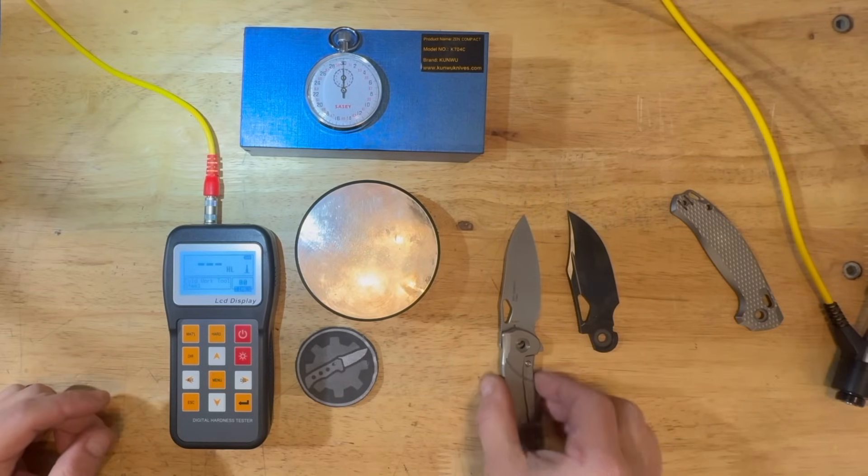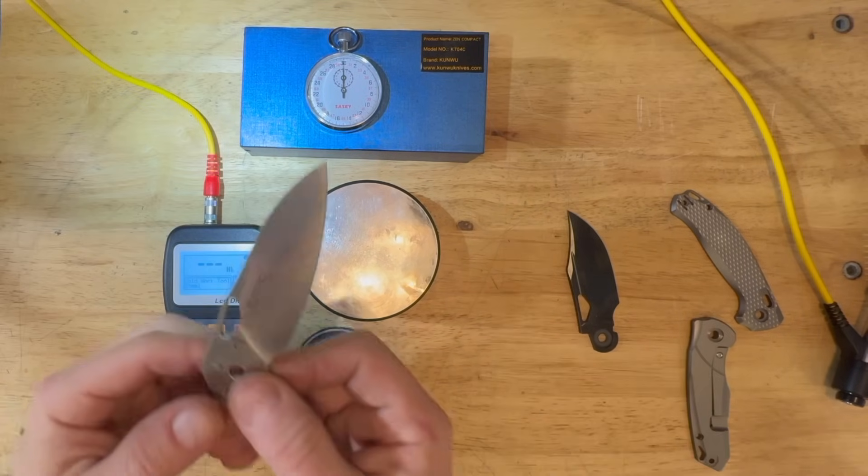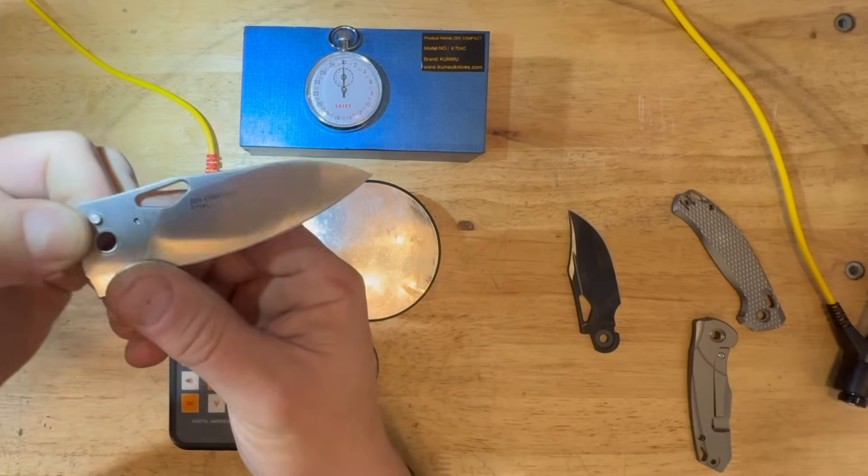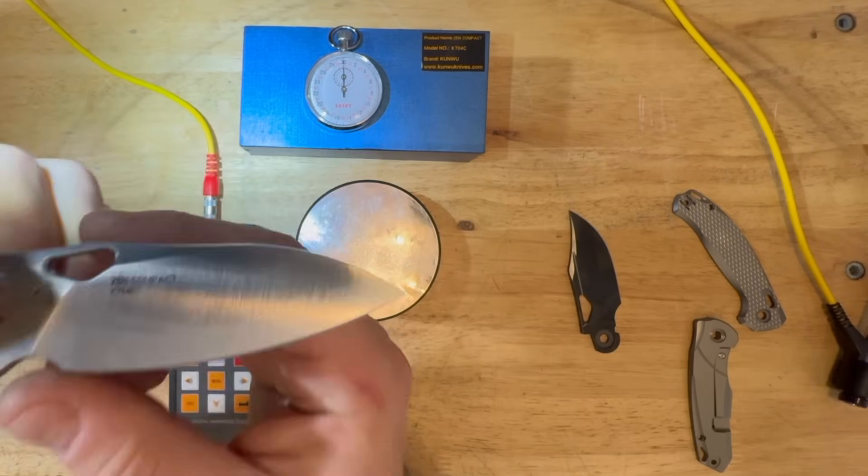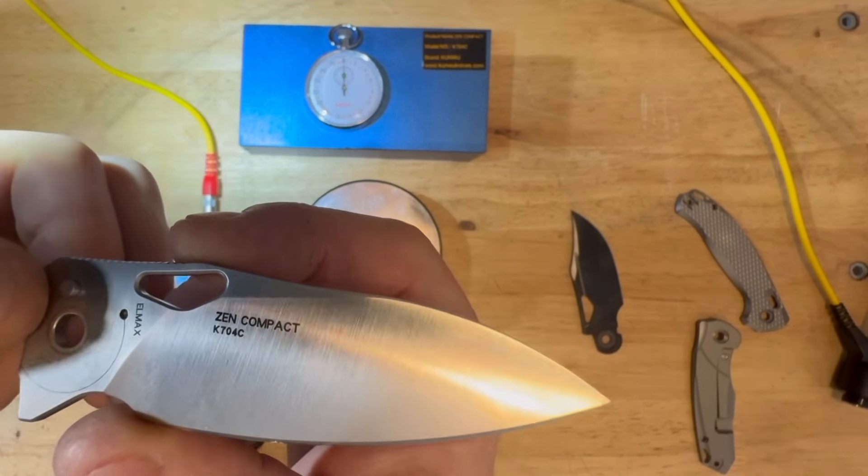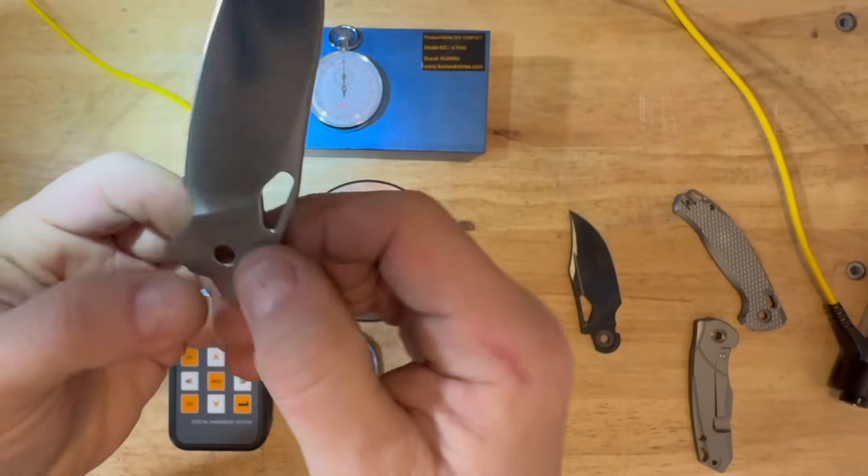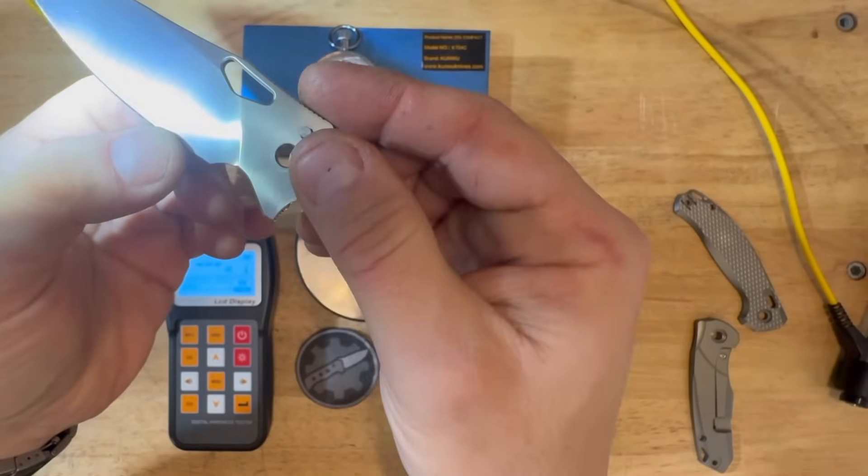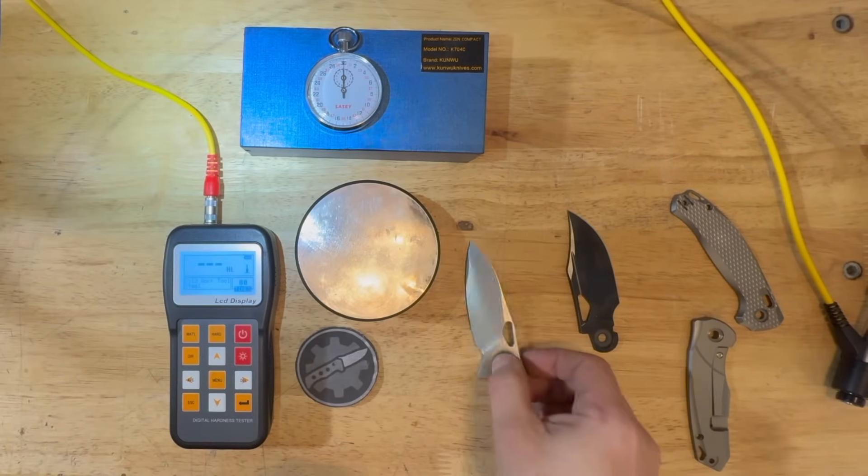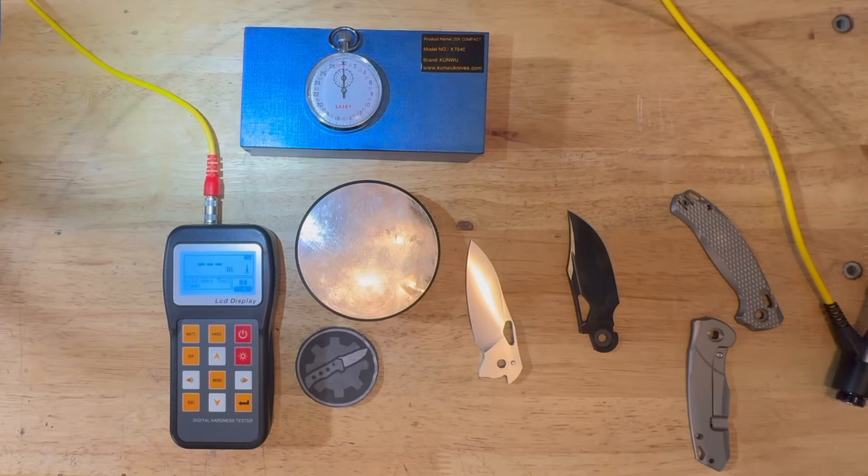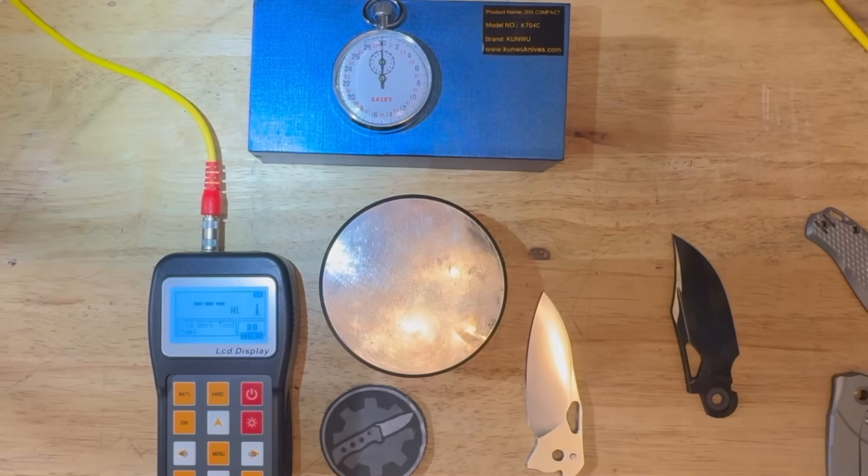So here are the two knives, both made by Kunwu. On the left this is an uncoated LMAX blade on a knife called Zen. Here you can see all the markings. It's LMAX steel and it was advertised to be at 60 to 62 HRC. And on the right is the DLC coated LMAX blade off of Django.